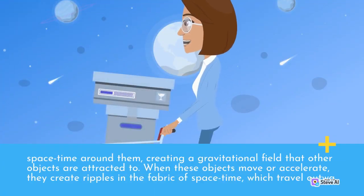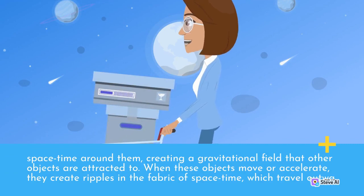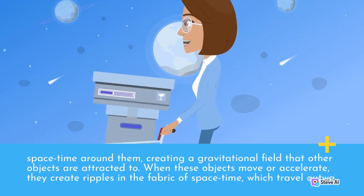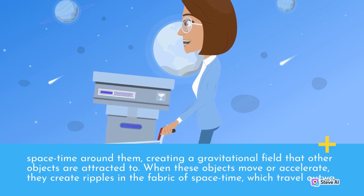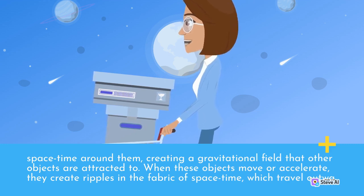Objects with mass warp the fabric of spacetime around them, creating a gravitational field that other objects are attracted to. When these objects move or accelerate, they create ripples in the fabric of spacetime which travel outward.